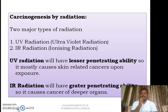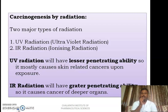UV radiation will have lesser penetrating ability; it can penetrate only up to your skin. That is why upon chronic exposure to UV radiation, you will develop mostly skin cancers. IR radiation will have a greater penetrating ability, so upon chronic exposure to IR radiation, it results in cancer of deeper organs.